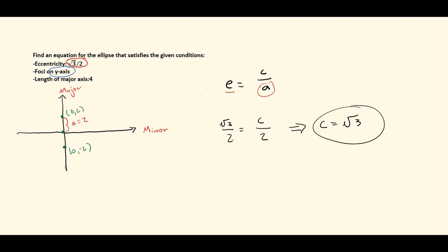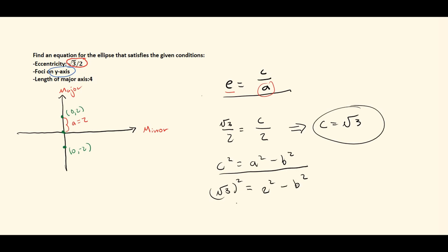Now that we know c and a, we use the equation c squared equals a squared minus b squared. Plugging in, the square root of three squared equals two squared minus b squared, which gives us three equals four minus b squared. Subtracting four from both sides gives negative one equals negative b squared, so b squared equals one, and therefore b equals one.